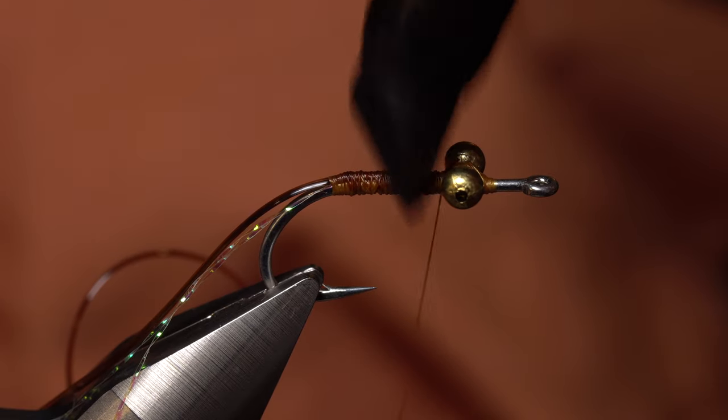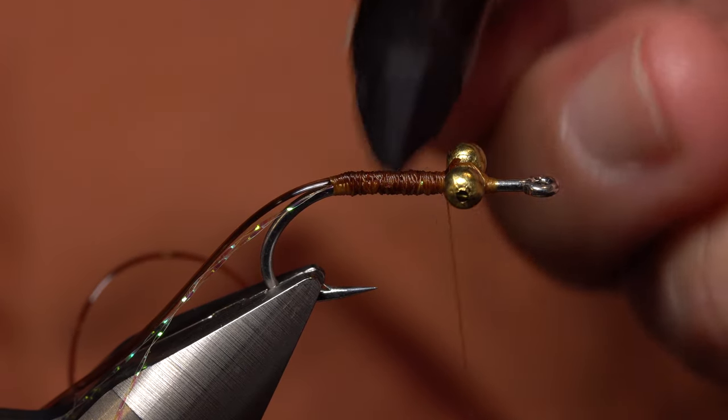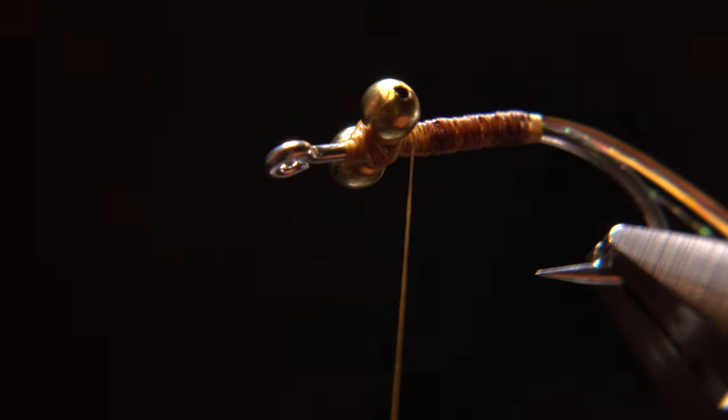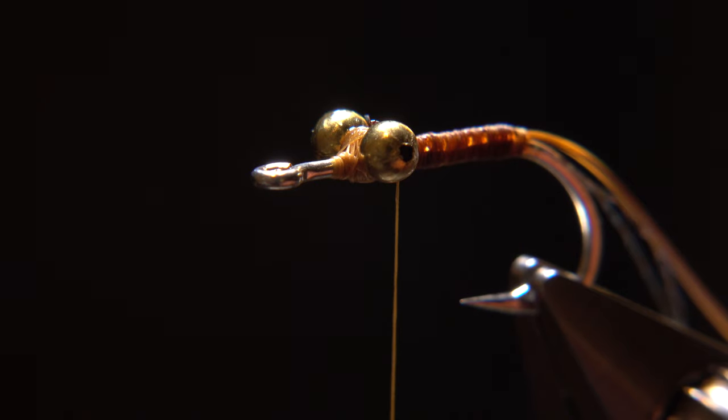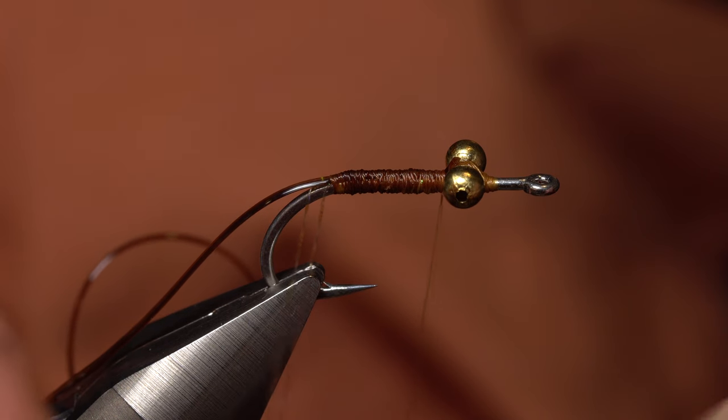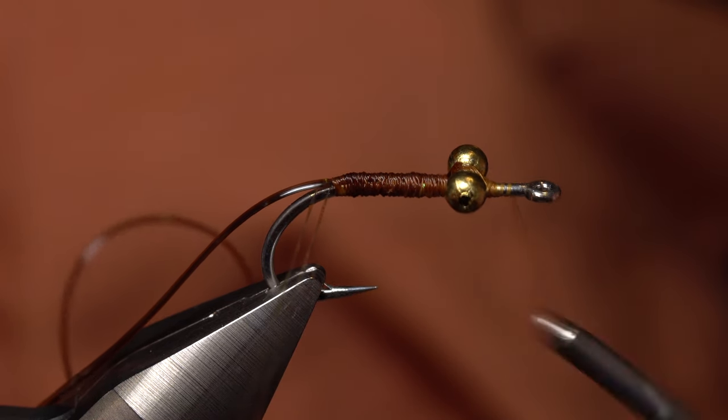Peter uses a brown permanent marker to darken the entire underbody of the fly, as Hawaii's larger bones seem to prefer slightly darker patterns. Advance your tying thread forward to behind the hook eye so it's out of the way.